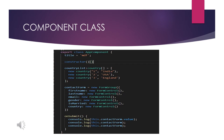Inside the component class, I have a title 'MDF'. I have an empty constructor and a countryList with three entries — India (id:1), USA (id:2), and England (id:3) — each having an id (c.id) and a name (c.name). Once the contactForm is defined, I create a new FormGroup and assign FormControl instances for firstName, lastName, gender, isMarried, and country, matching what was declared in the template.